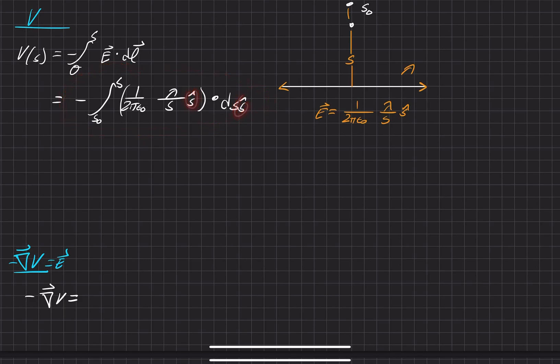Since they both point in the S-hat direction, we can turn that dot product into an actual multiplication. We'll pull out the constants here. And what we have left is an integral from S naught to S of 1 over S, DS. And assuming our calculus isn't too rusty, we know it's just going to be the natural log of those two values here.